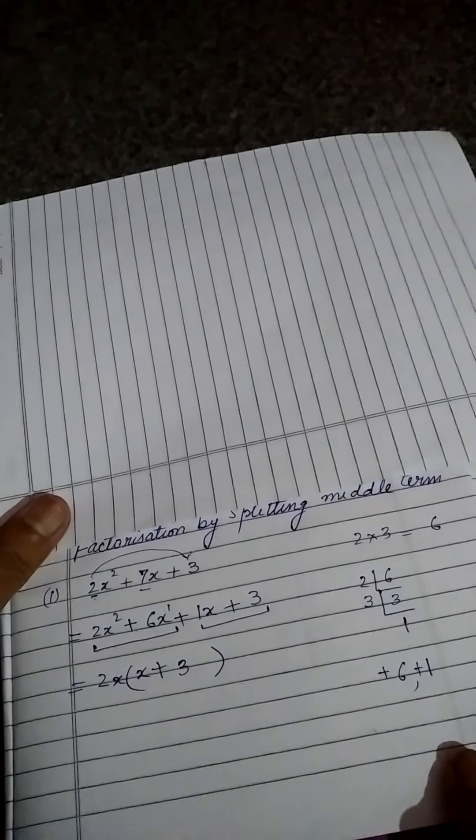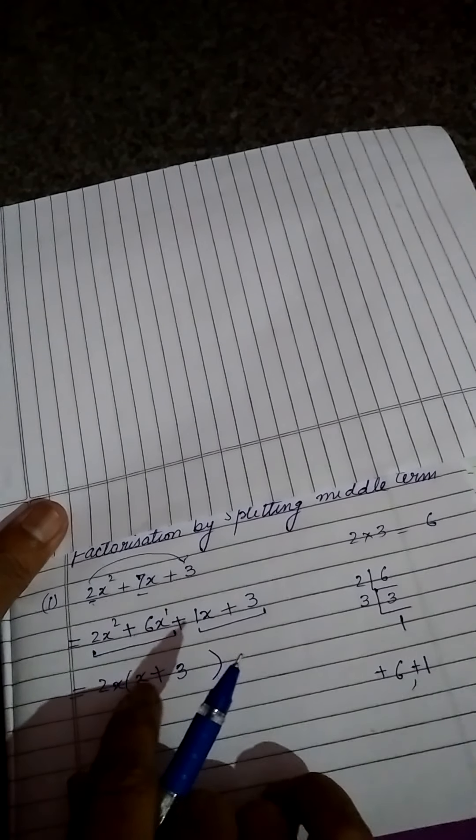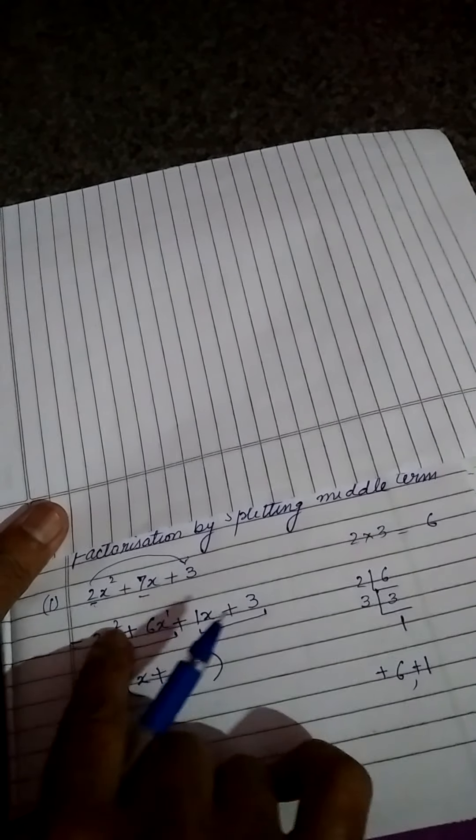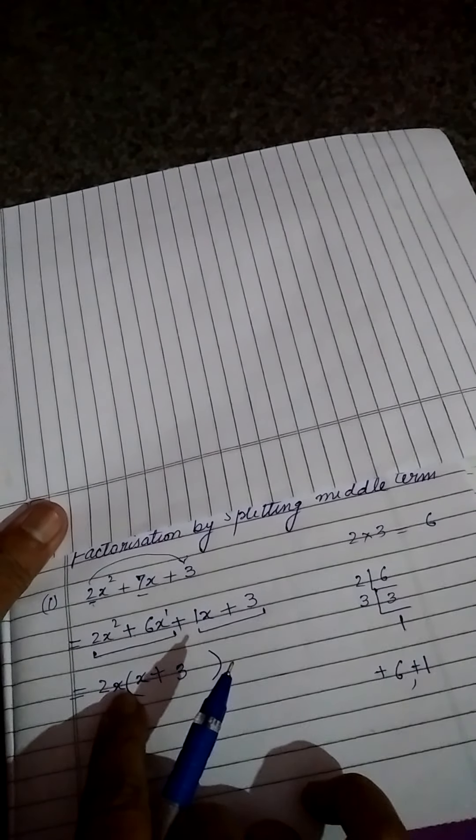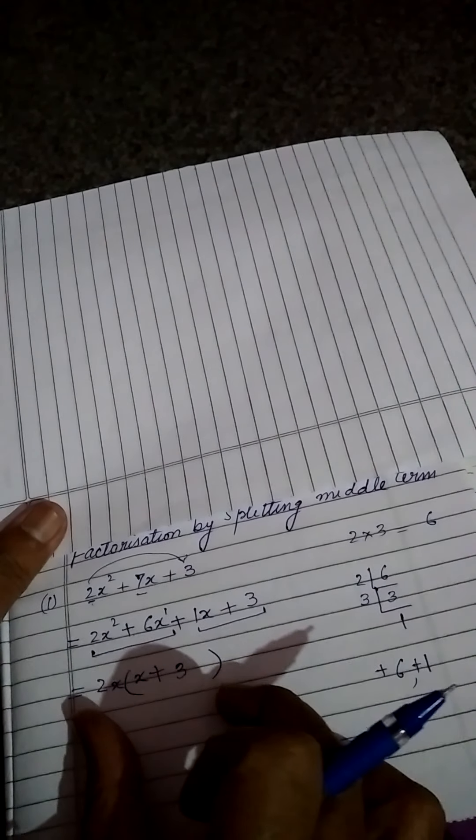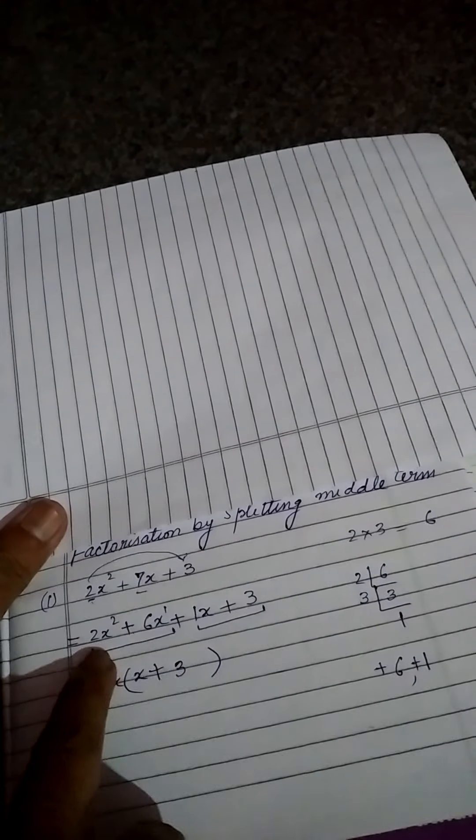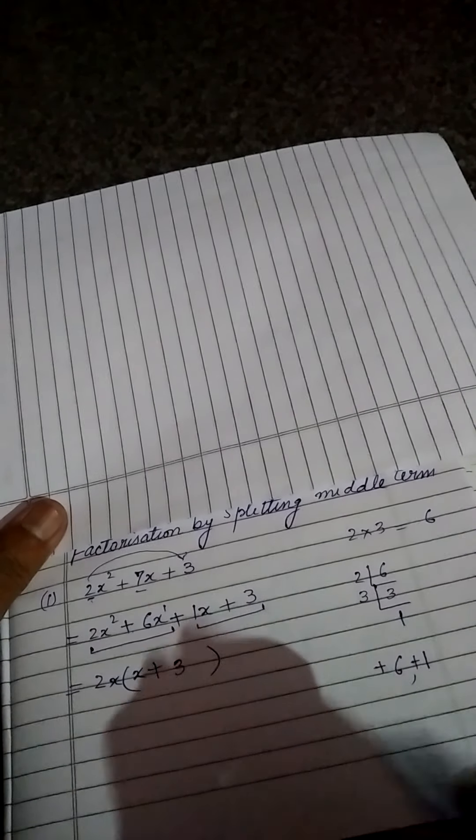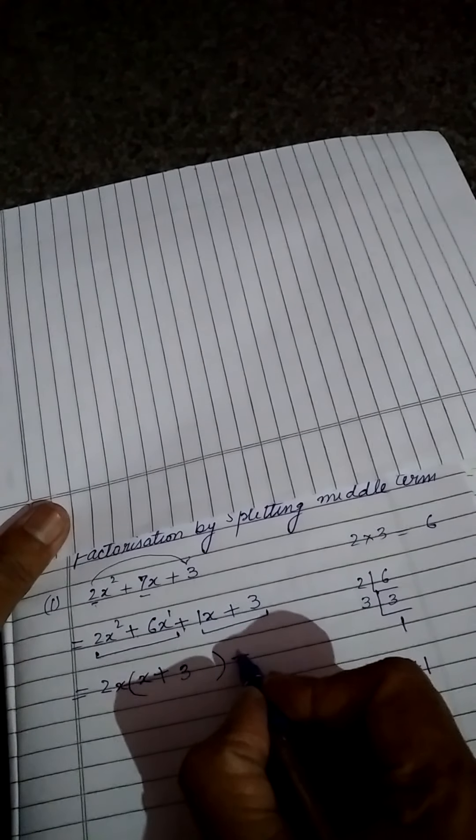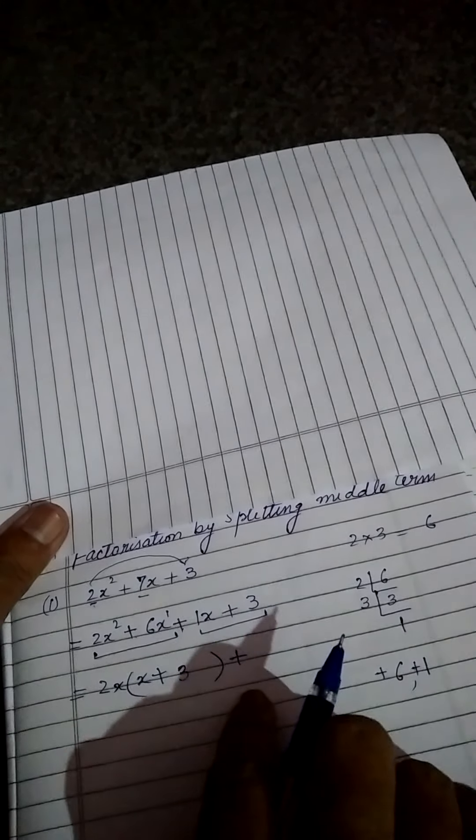If you want to check whether you have done correctly or not, you reverse the process. If you multiply 2x into x, it will become 2x square. When you multiply 2x into 3, 2 threes are 6 and x will come with it. So if you want to check you reverse. Again multiply in your mind and check whether it is coming or not. And after that here whatever sign is there must be written. Generally students forget to write here sign. That is a mistake. So here plus is there. So we will write plus.